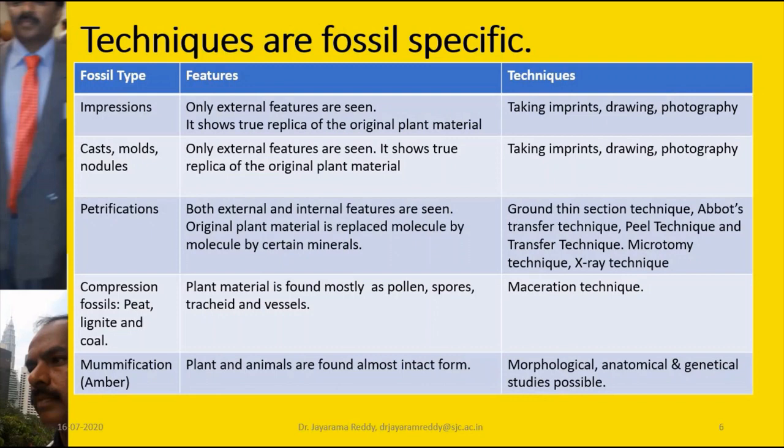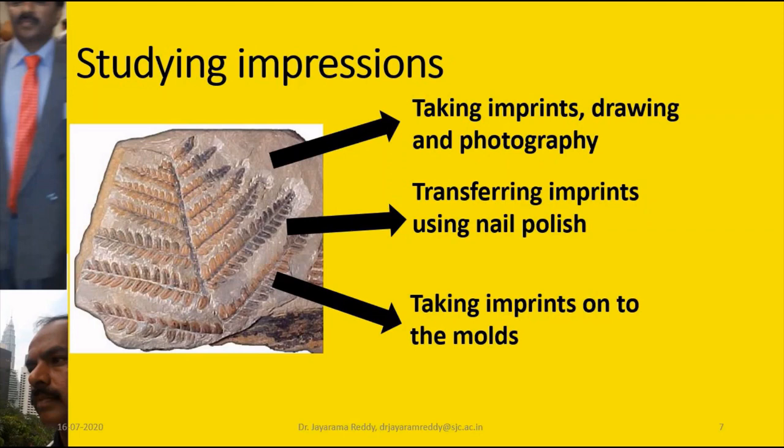The last type of fossil is mummification or amber, where the plant or animal is actually preserved in intact and dried form. Here morphology, anatomy, and genetics of these fossils can be studied.